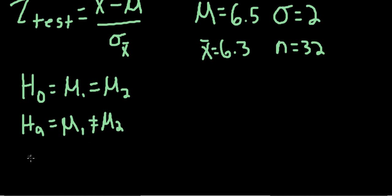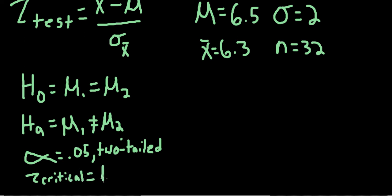We'll need an alpha or a significance criterion. We'll go with the conventional 0.05 two-tailed. And we'll need a z-critical that corresponds to that alpha. The z-critical that corresponds to alpha 0.05 two-tailed is 1.96.